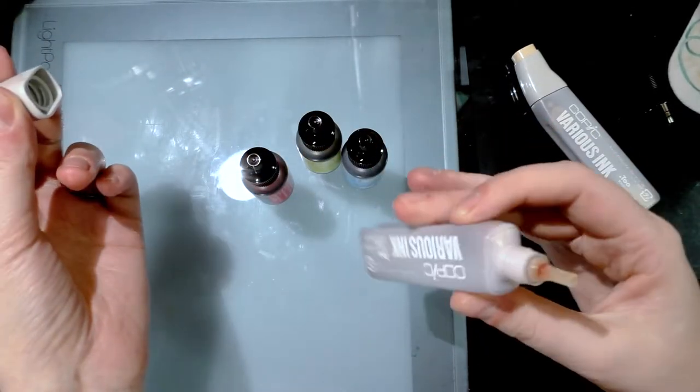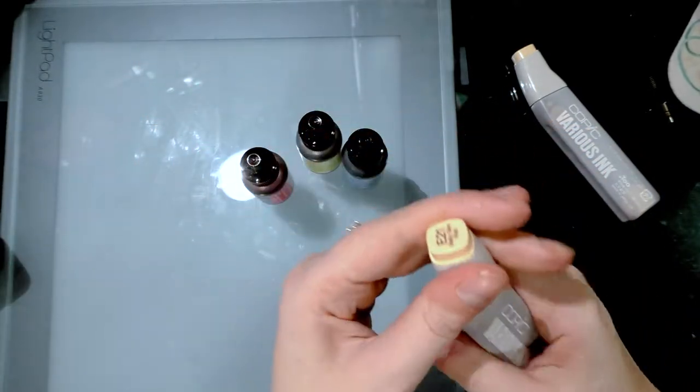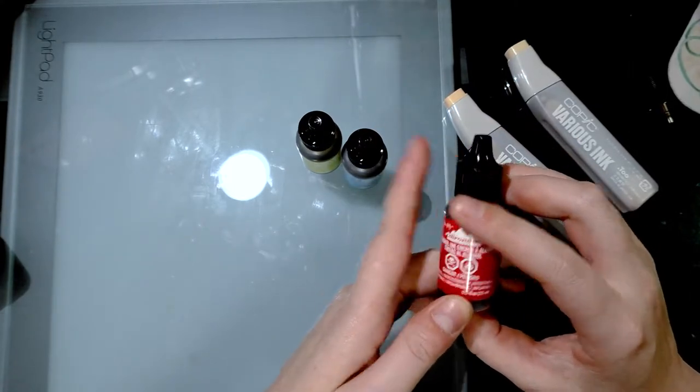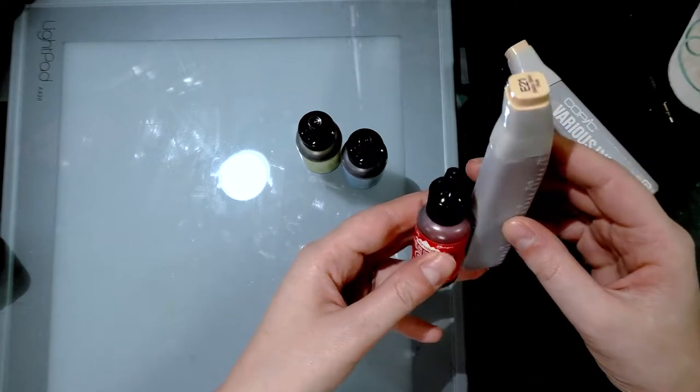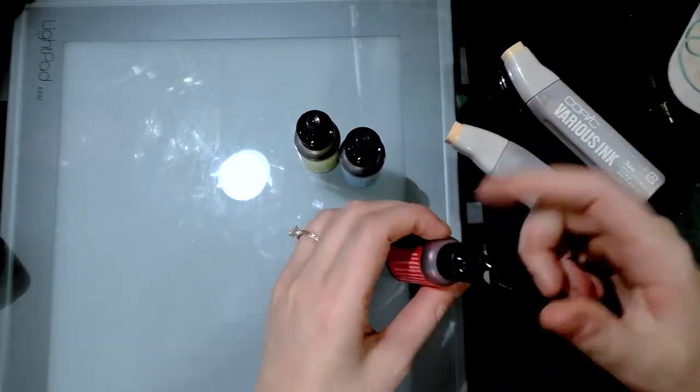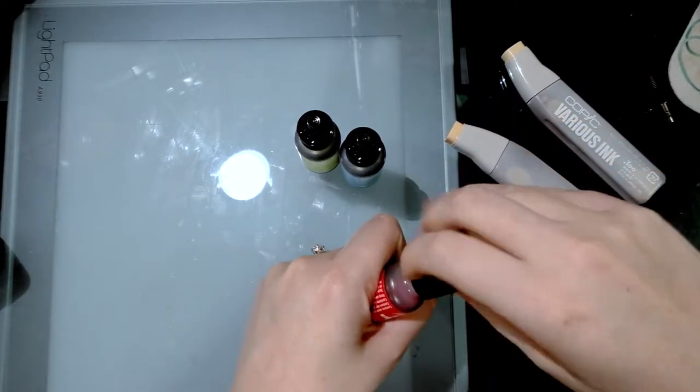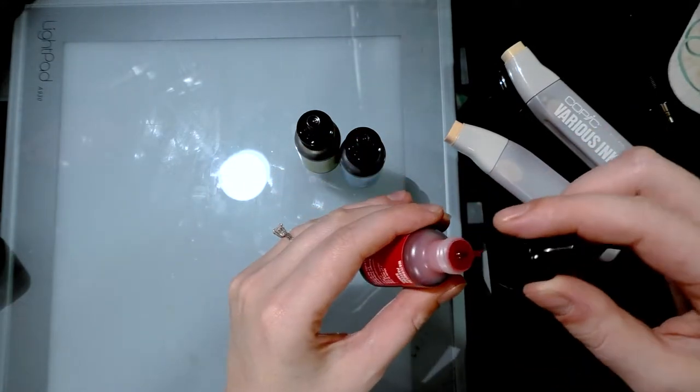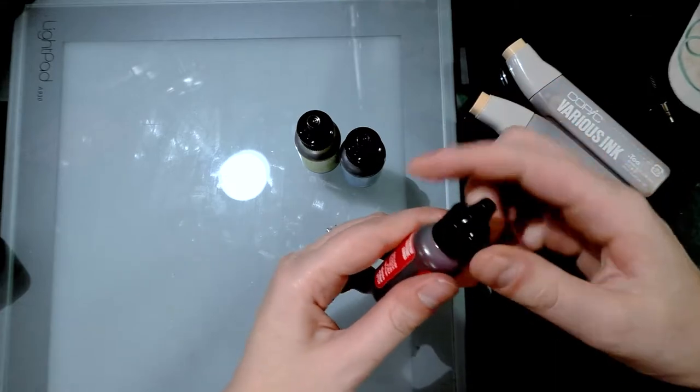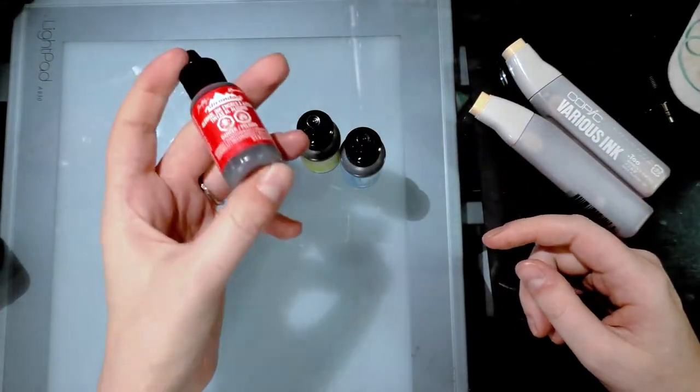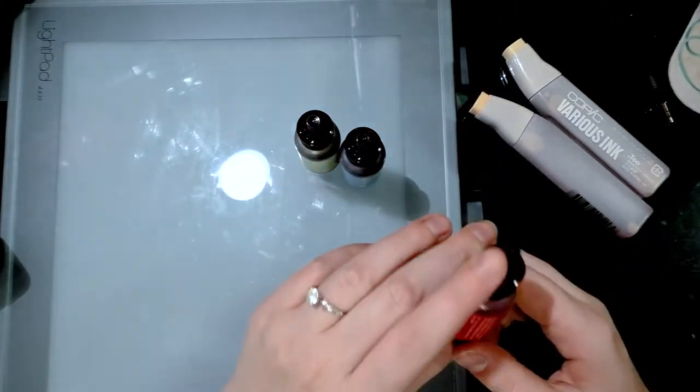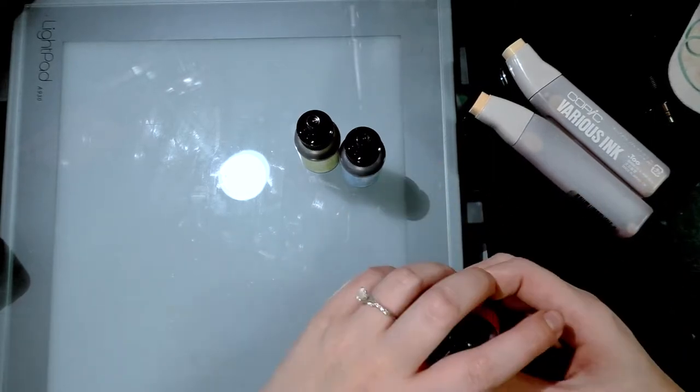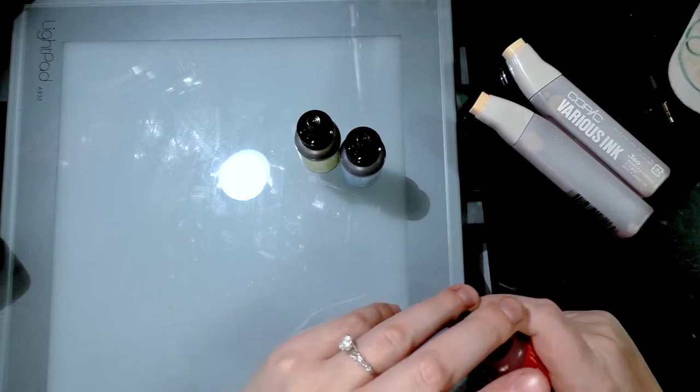Tim Holtz inks are 0.5 fluid ounces, so 15 milliliters, about 10 milliliters less than the Copic. They also have little droppers. Their dropper is much finer than the various inks eyedroppers. These are not necessarily intended to be a refill, they're intended to be used on their own. There are a few techniques online on YouTube showing how to use them if you check out Tim Holtz's channel.